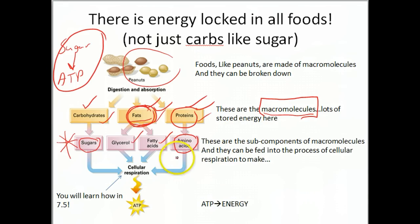All of these subcomponents—amino acids, sugars, glycerol, fatty acids—can be put into cellular respiration. There's various pathways, and they can produce ATP. There's multiple sources of energy that can be put into cellular respiration to make ATP. We'll learn the specifics of this process in 7.5.